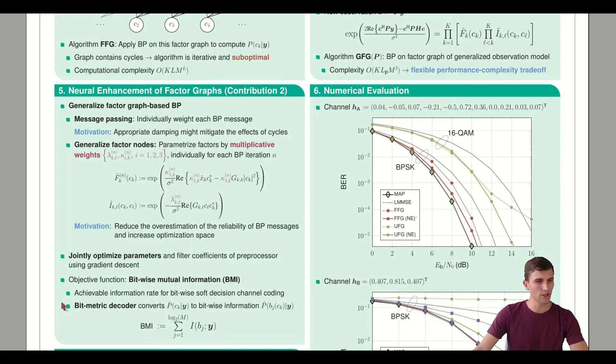We use the objective function, the bitwise mutual information. This is the true achievable rate if we apply bit interleaved coded modulation. Instead of using mutual information on symbol basis, we use a bit metric decoder which converts the symbol-wise APPs into bitwise APPs. We split up our channel into multiple parallel bitwise channels. The bitwise mutual information is given as the sum of the mutual information of these bitwise channels.